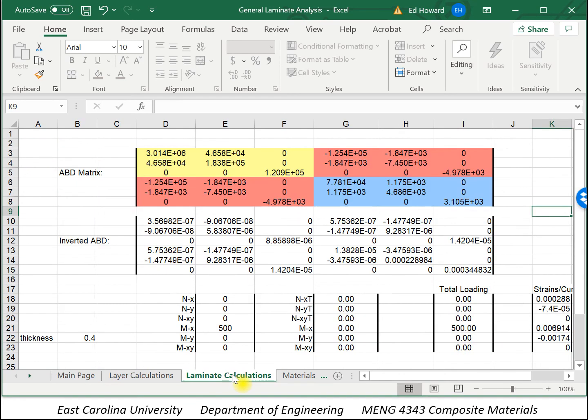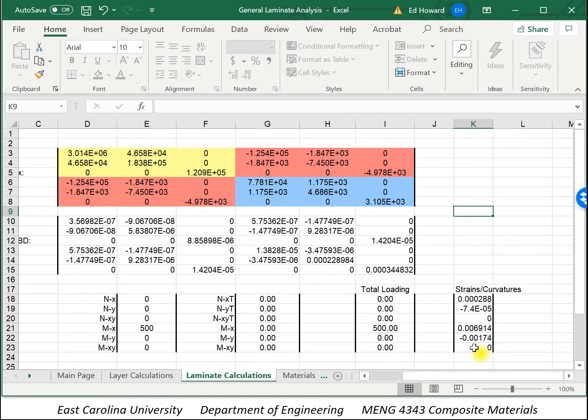And if we went and looked at the laminate calculations, you'd see now the B matrix is populated because this is a non-symmetric laminate. And so in addition to the curvatures that were calculated for the moment resultant, now there would actually be mid-plane strains because of the bend-extension coupling that occurs because of the B matrices.